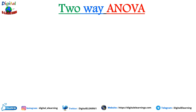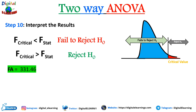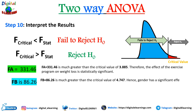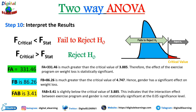Step ten: interpret the results. If the F-calculated value exceeds the critical value, we reject the null hypothesis. For exercise program, F = 331.46, which is much greater than the critical value of 3.89 — so the effect of exercise program on weight loss is statistically significant. For gender, F = 86.26, which is much greater than 4.75 — so gender has a significant effect on weight loss. For interaction, F = 3.45, which is slightly below the critical value of 3.89 — so the interaction effect between exercise program and gender is not statistically significant.